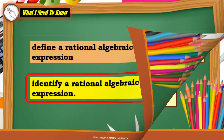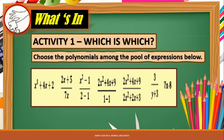What's in for Activity 1 — 'Which is Which?' Choose the polynomials among the pool of expressions below. We have: x³ + 4x + 2; (2x + 5) / 7x; (x² - 1) / (2 - 1); (2x² + 4x + 9) / 1; (2x² + 4x + 9) / (2x² + 2x + 3); 3 / (y + 3); and 7x - 8.